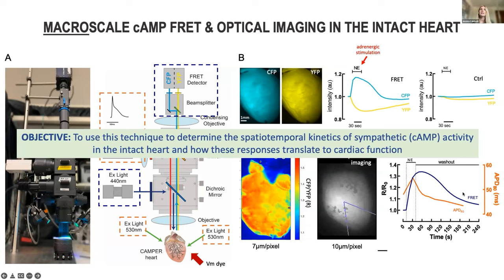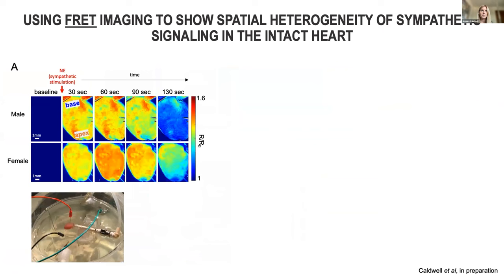The objective in the lab has been to use this technique to determine the spatial kinetics of sympathetic activity in the whole organ and how these responses translate to cardiac function. I'm going to show you some data collected using this setup. In one experiment with isolated hearts containing the FRET sensor, I use a drug to temporarily activate sympathetic stimulation and monitor the responses over time. The resultant cyclic AMP activity can be seen on these FRET ratio maps, where warm colors indicate high cyclic AMP. I further divided the data by sex, because we know sex plays a key role in arrhythmogenesis.